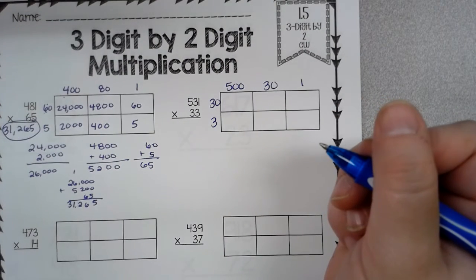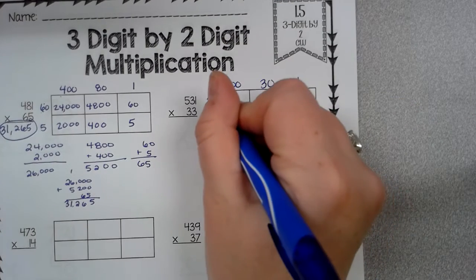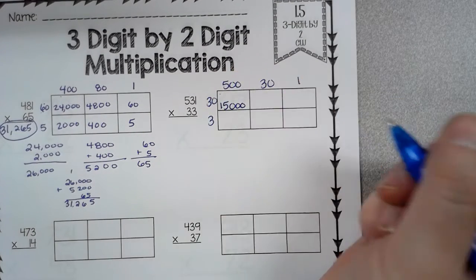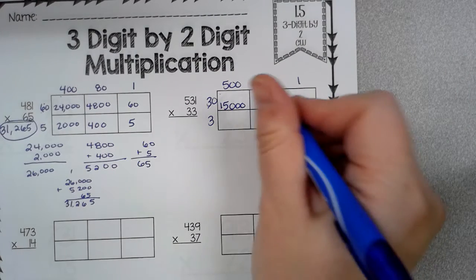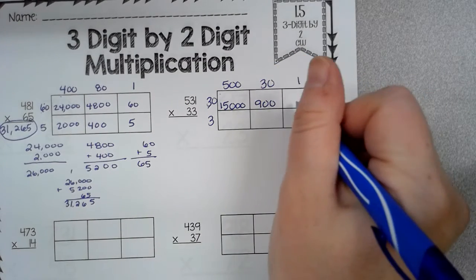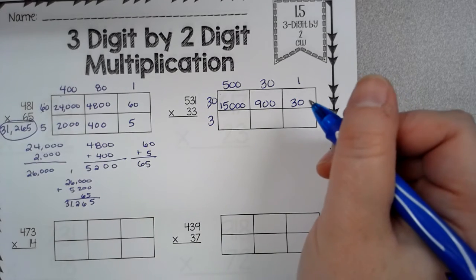Now just look how I line my numbers. I'm going to make sure I line these numbers up. 3 times 5 is 15, 2 zeros. 3 times 3 is 9 with 2 zeros. 30 times 1 is 30. Now this is where I'm going to make sure I line up my numbers.